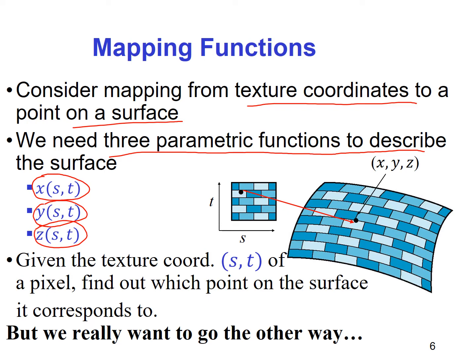S and T are the coordinates of the pixels in the image, and X, Y, Z are the coordinates of a point on the three-dimensional surface. Given the texture coordinate S and T of a pixel, we need to find out which point on the surface it corresponds to.